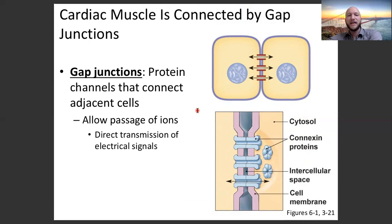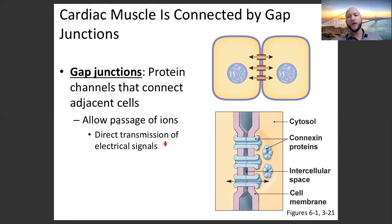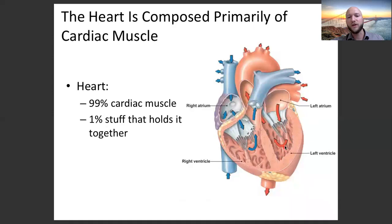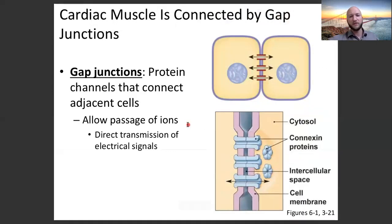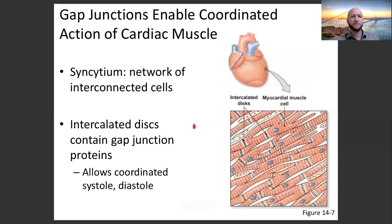The heart has gap junctions — direct cytoplasmic connections between heart cells — which allow for very coordinated, efficient contraction. Gap junctions are protein channels that connect adjacent cells and allow the passage of ions and the direct transmission of electrical signals. When one heart cell contracts, it passes that contraction to the next heart cell, enabling a very coordinated contraction of heart muscle.